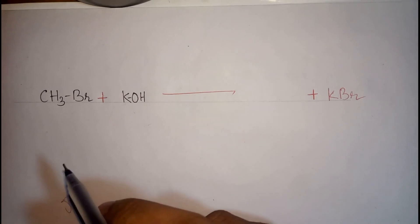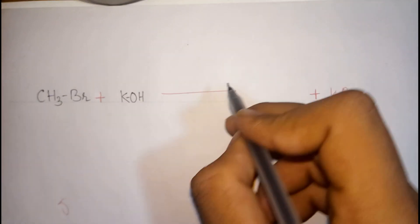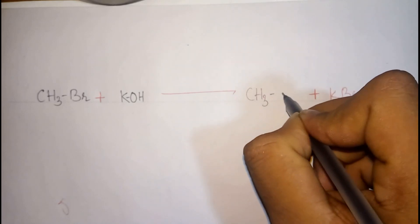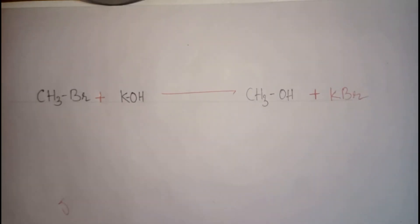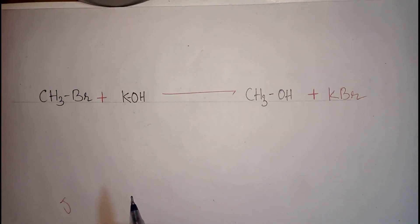Now the remaining thing in the reactant side is CH3 in one molecule and OH in the other molecule. Now the simple thing is to combine both the reactant molecules and write the required product. Again you should not forget to satisfy the bond where it has broken.